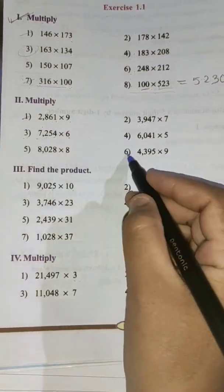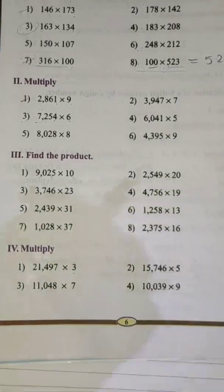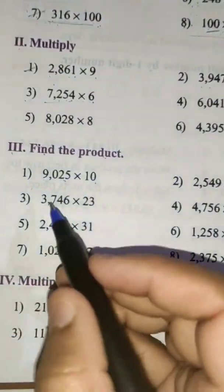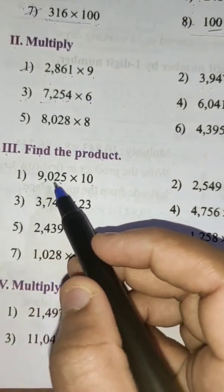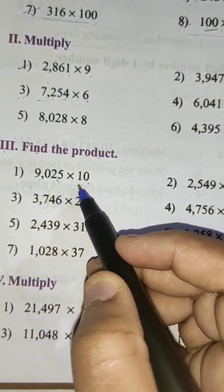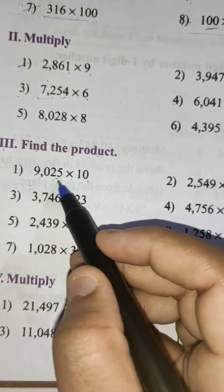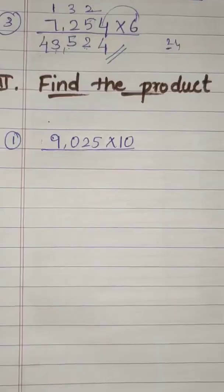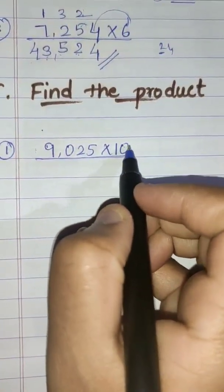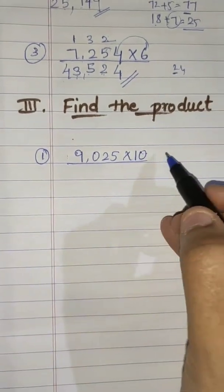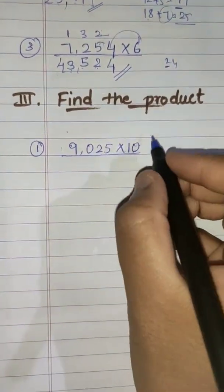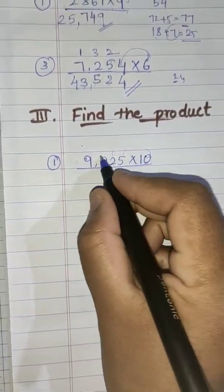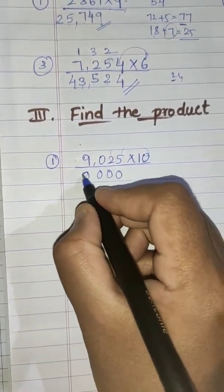There are still three more examples — 4, 5, and 6 — just try to do them by yourself. Now we'll come to the third main: find the product. First one: 9025 into 110. You have to multiply this four-digit number by a two-digit number. You know that we always start multiplying from the digit in the units place, so here 0 is in the units place: 0 fives are 0, 0 twos are 0, 0 zeros are 0, 0 nines are 0.